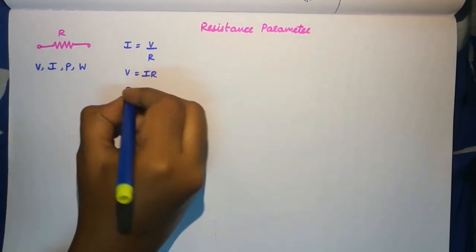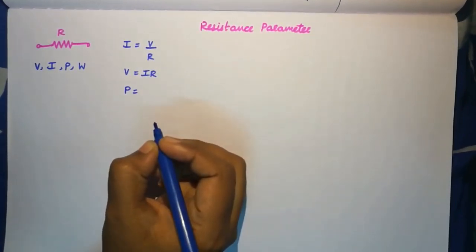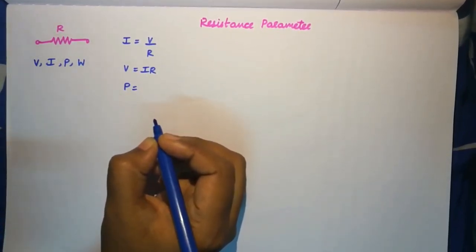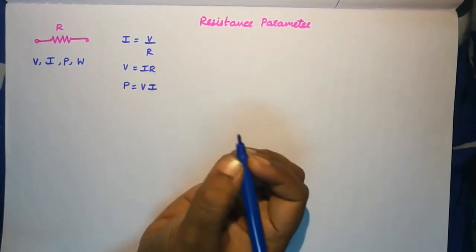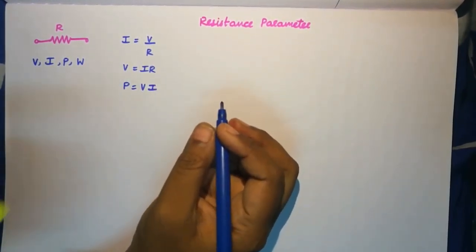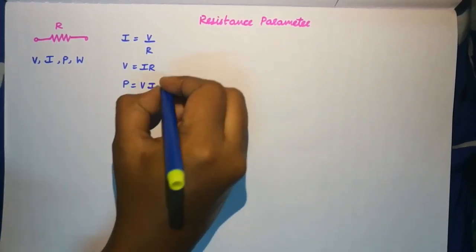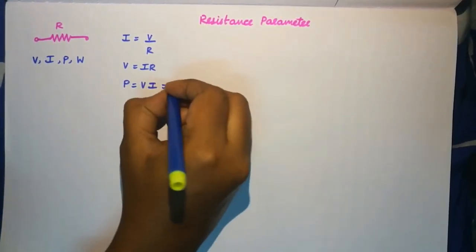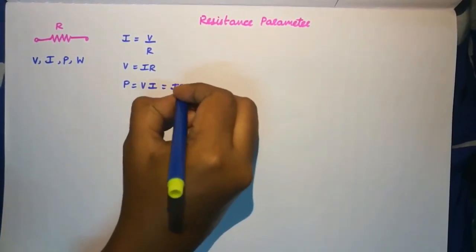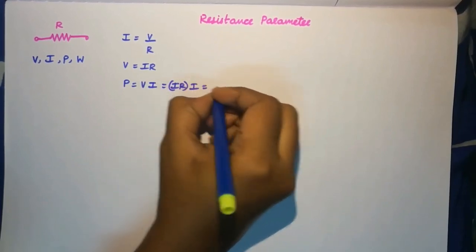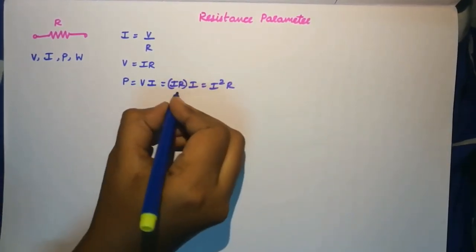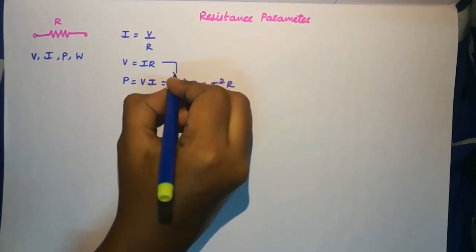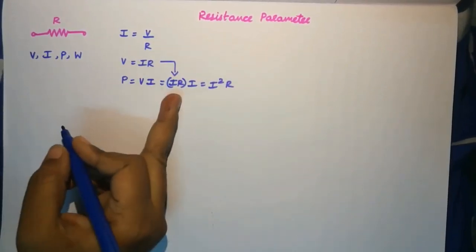What about power? The power lost in the resistor is equal to the product of voltage and current, V × I. Substituting V = IR from Ohm's law, you get I × R × I, which is I²R.